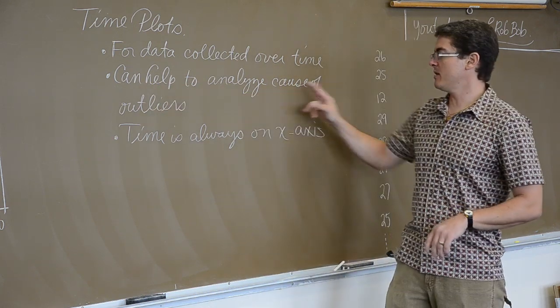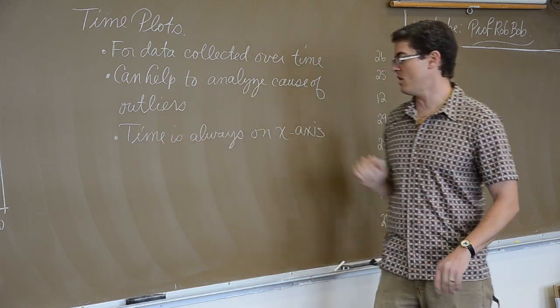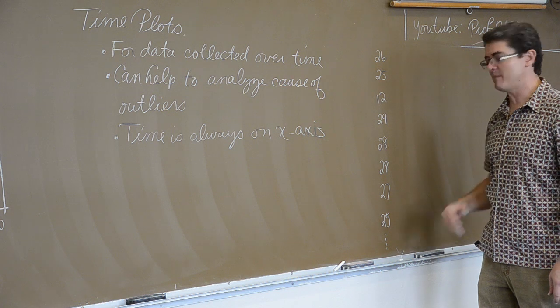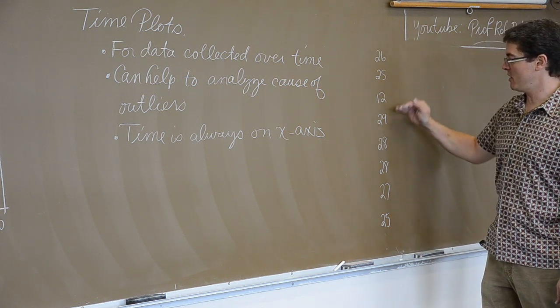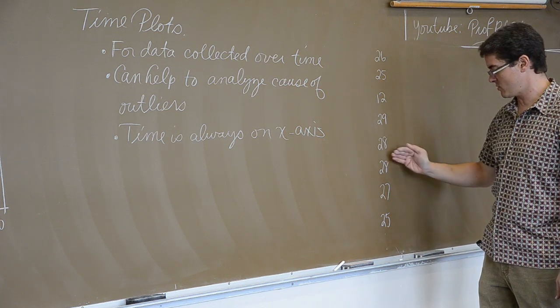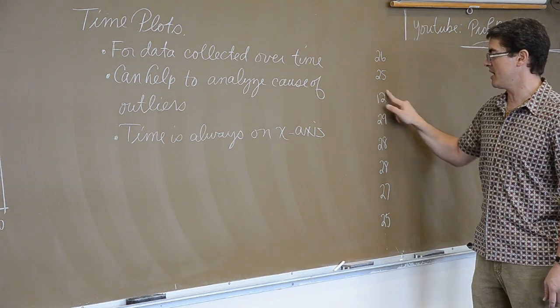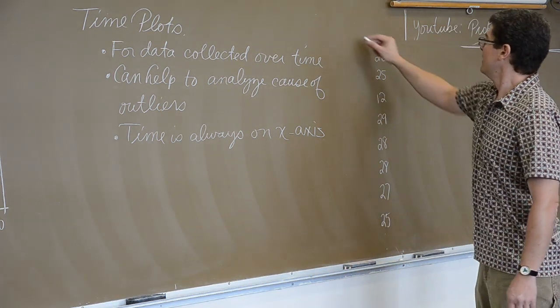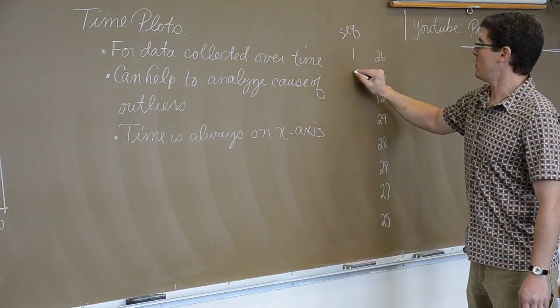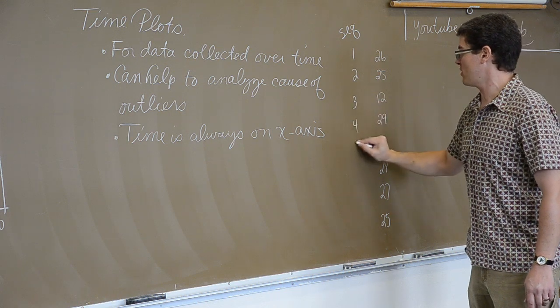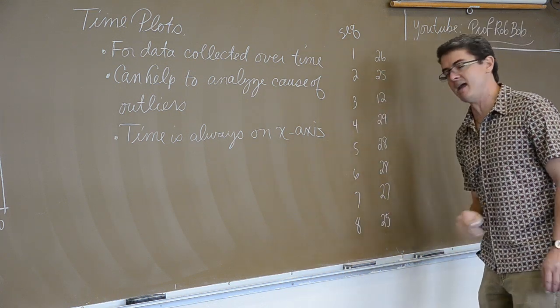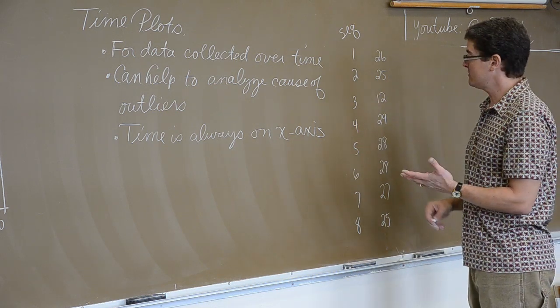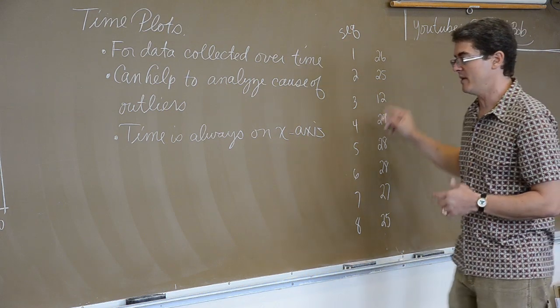We can use time plots to help analyze the cause of outliers, and time is always the x-axis. So, over here I have some values that I have collected. Maybe it was an experiment. And it is 26, 25, 12, 29, 28, 27, or 28, 27, and 25, and we have this outlier of 12. Now, this is a very small example, but if I were to say the sequence was one, two, three, four, five, six, and seven, and eight, I could make a time plot out of this data and show that my outlier happened early in the experiment.